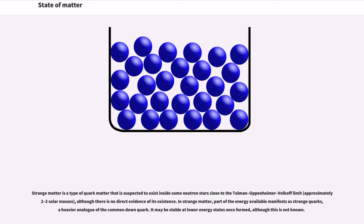Strange matter is a type of quark matter that is suspected to exist inside some neutron stars close to the Tolman-Oppenheimer-Volkoff limit, approximately two to three solar masses, although there is no direct evidence of its existence. In strange matter, part of the energy available manifests as strange quarks, a heavier analog of the common down quark. It may be stable at lower energy states once formed, although this is not known.